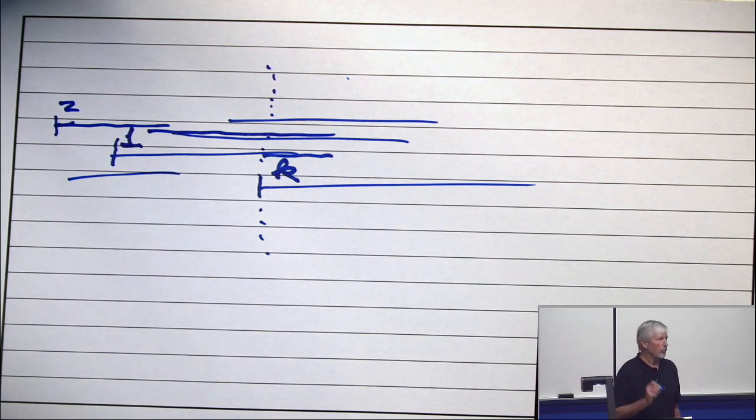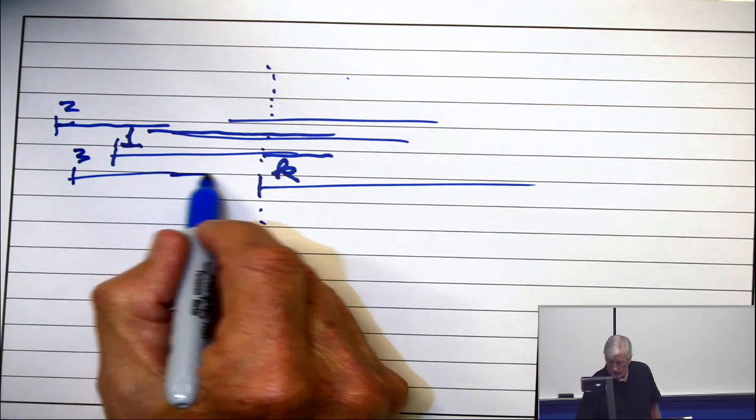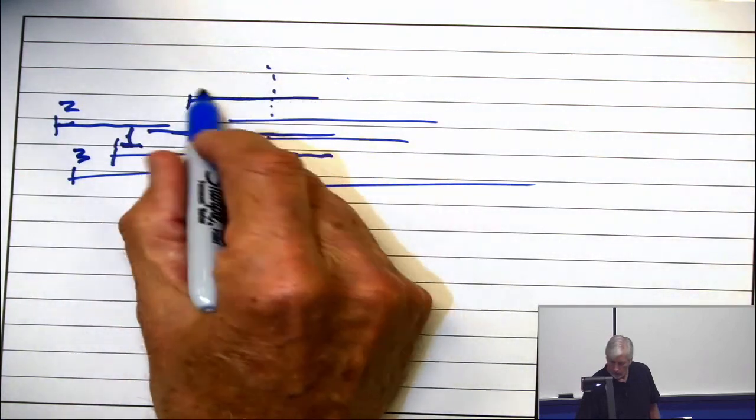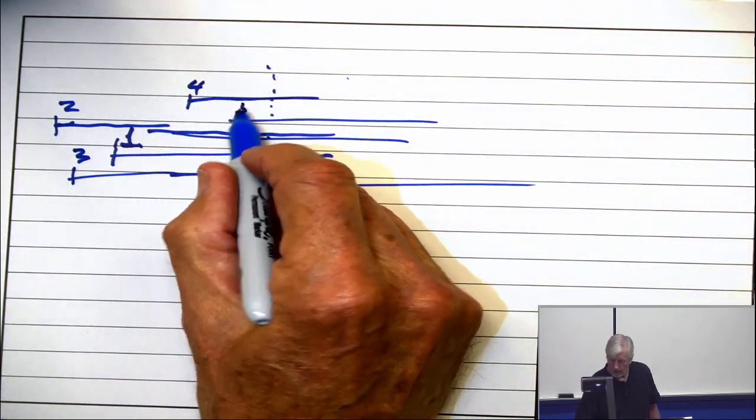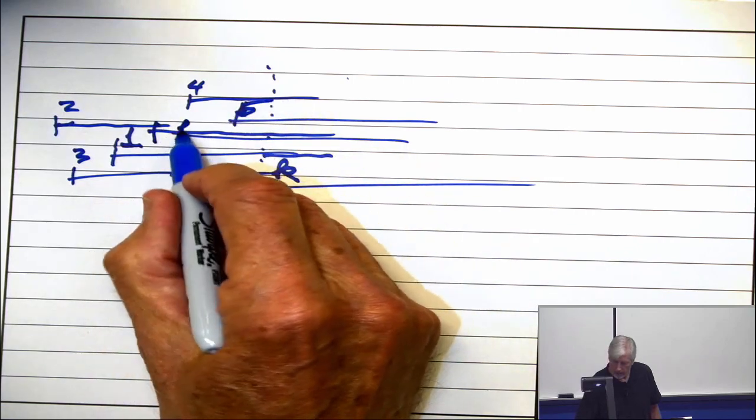Same for color 3, color 4, up to color K minus 1. So somewhere there's a 3, somewhere there's a 4, somewhere there's a 5, etc., up to finally a K minus 1.